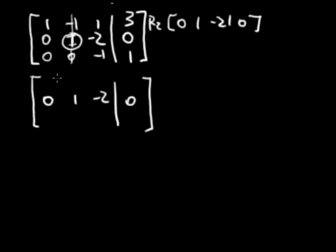Now I add them. So 1 and 0 is 1. Negative 1 and 1 is 0. 1 and negative 2 is negative 1. 3 and 0 is 3. For row 3, it's already 0, so I'm just going to not do anything to it.